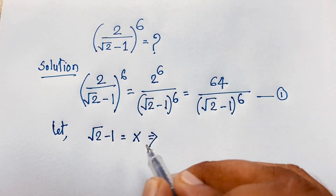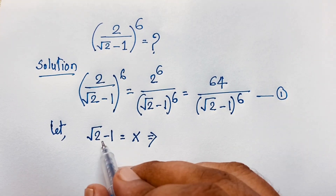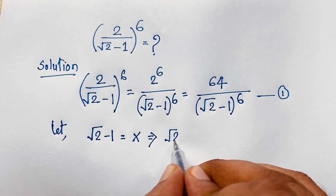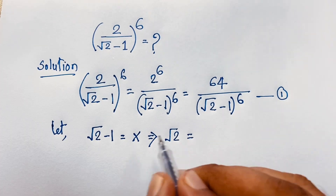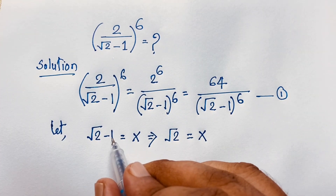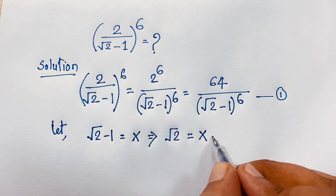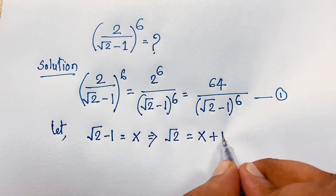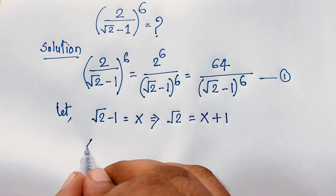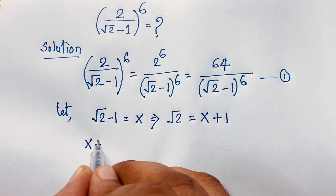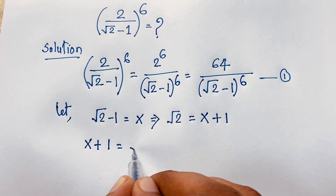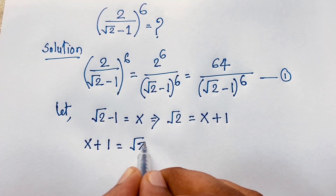Then this expression becomes: √2 equals x plus 1. If I move the negative 1 to the other side it becomes positive, so x plus 1 is equal to √2.